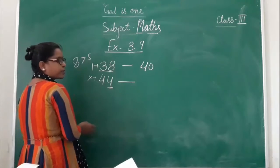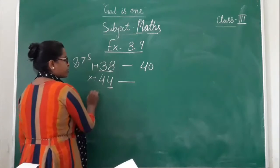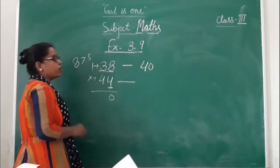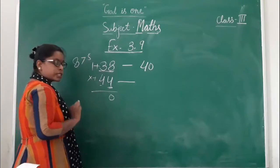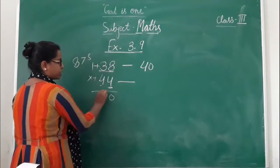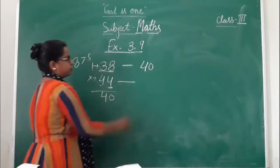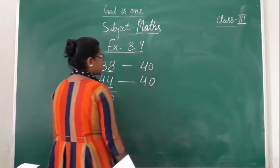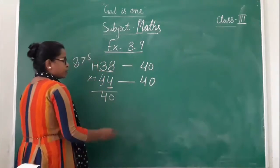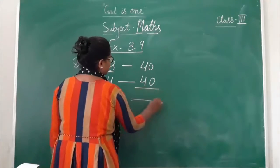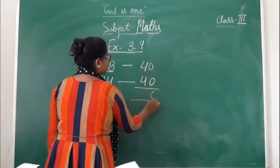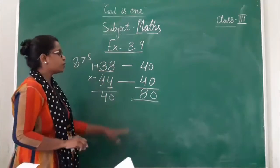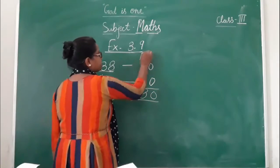If our ones digit is less than 5, then our tens place will not change. For example: 4 rounds to 40, then we add 0, giving 80. This is our estimating sum.